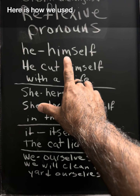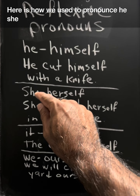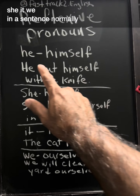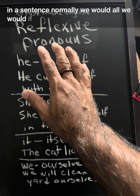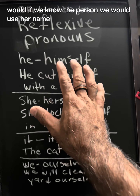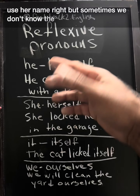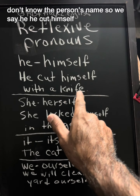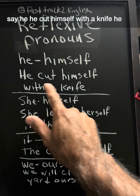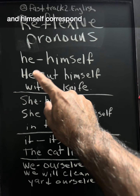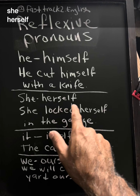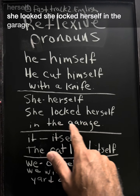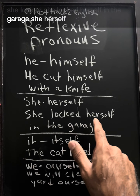Here is how we use the pronouns — he, she, it, we — in a sentence. Normally, if we know the person, we would use their name, but sometimes we don't know the person's name, so we say he. He cut himself with a knife. He and himself correspond. She, herself: She locked herself in the garage. She and herself correspond.